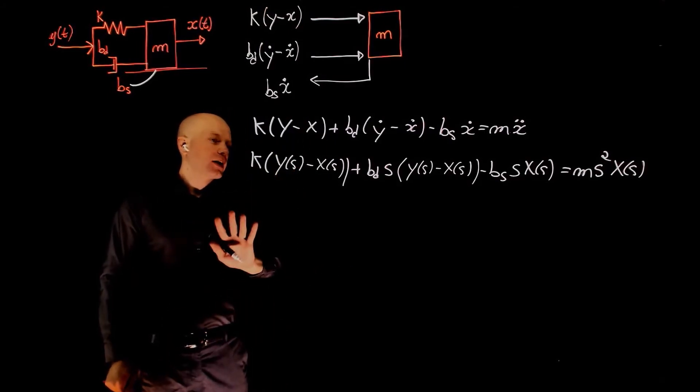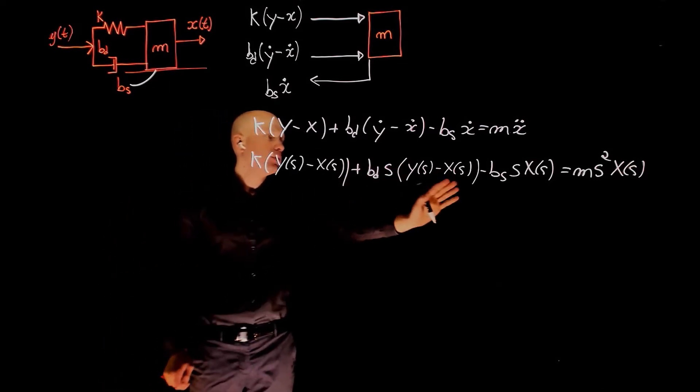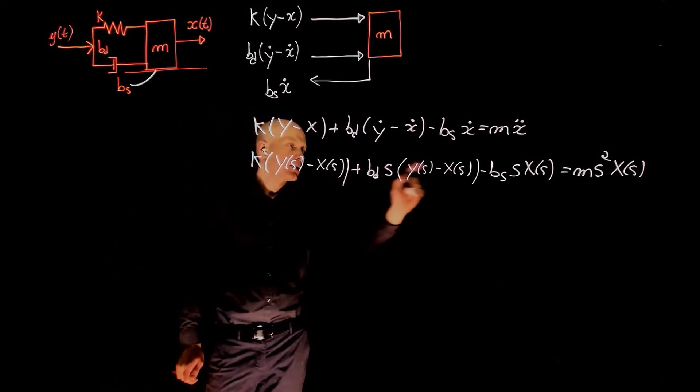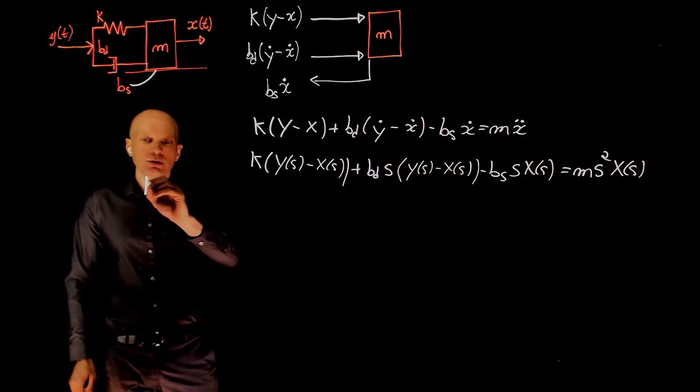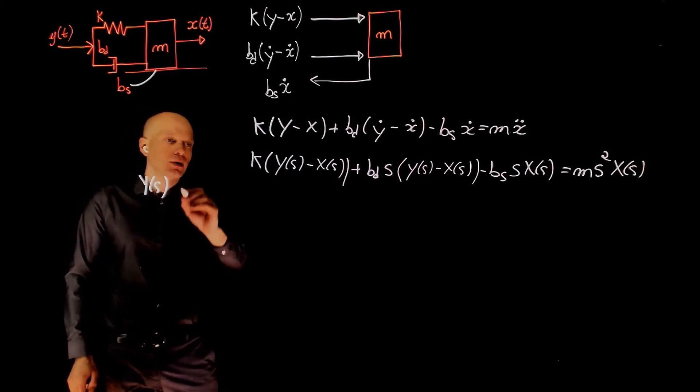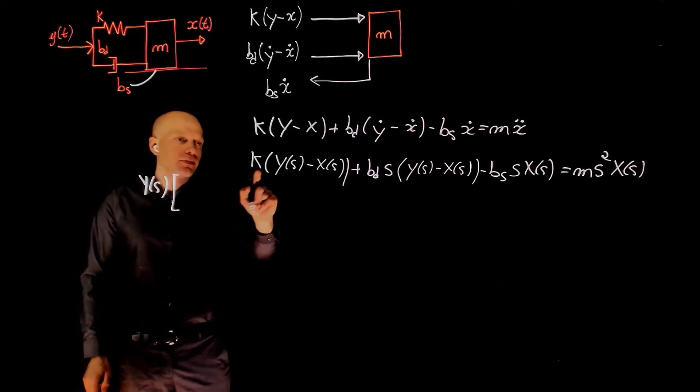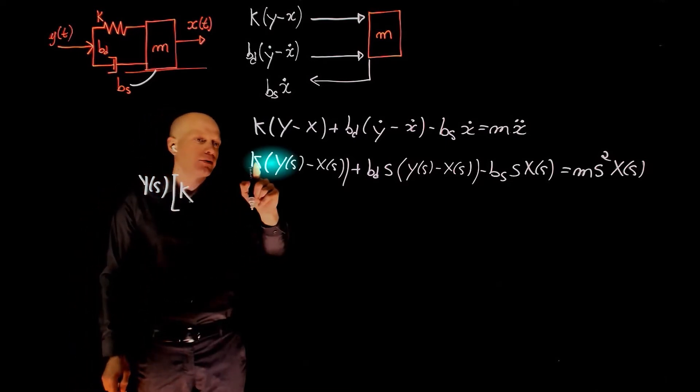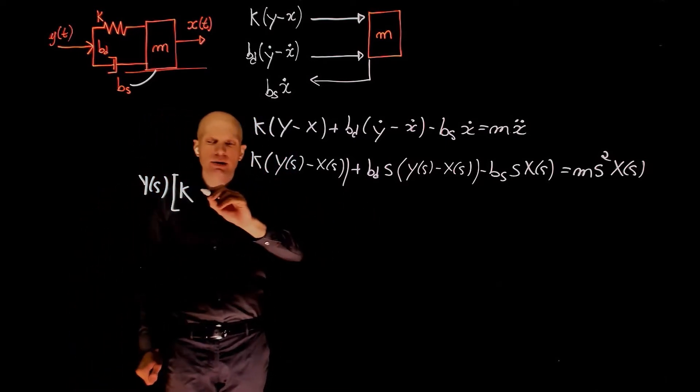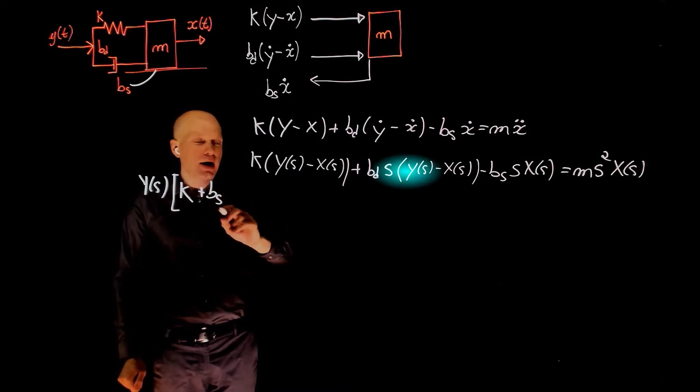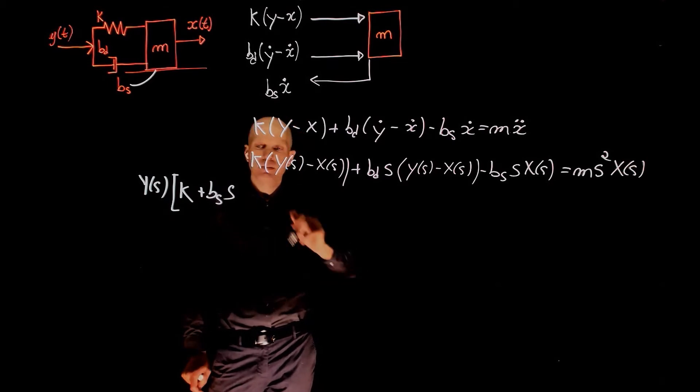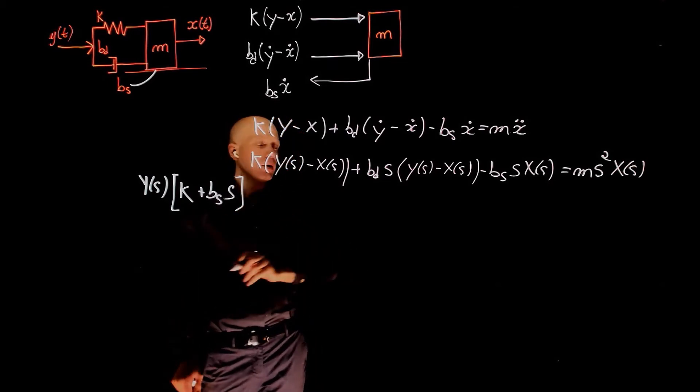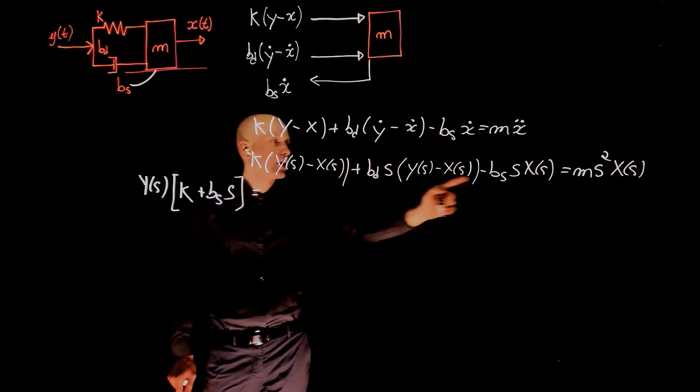We can now keep all y's of s on this side of the equation and move the x(s)'s to the other side. So y(s) multiplies k from here plus bs times s, and that's it. And this goes to the other side now.